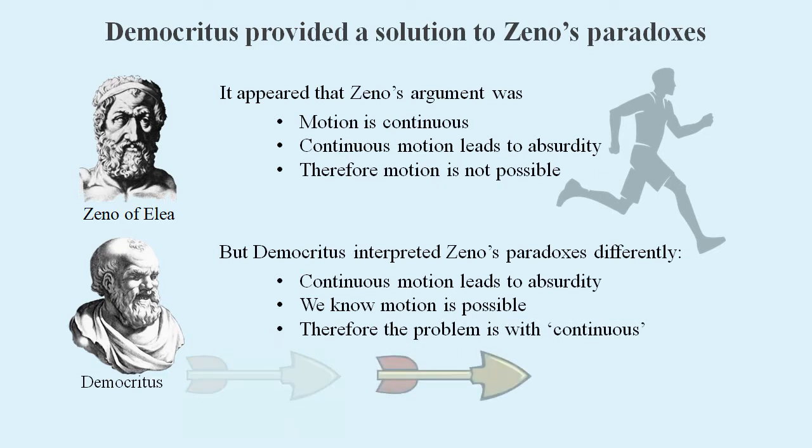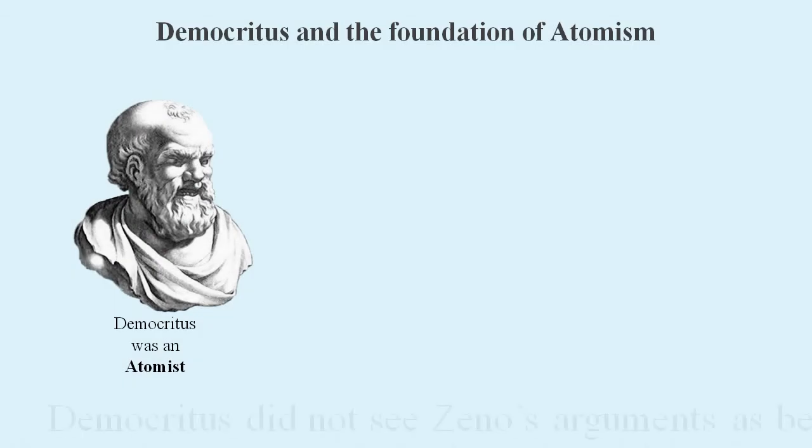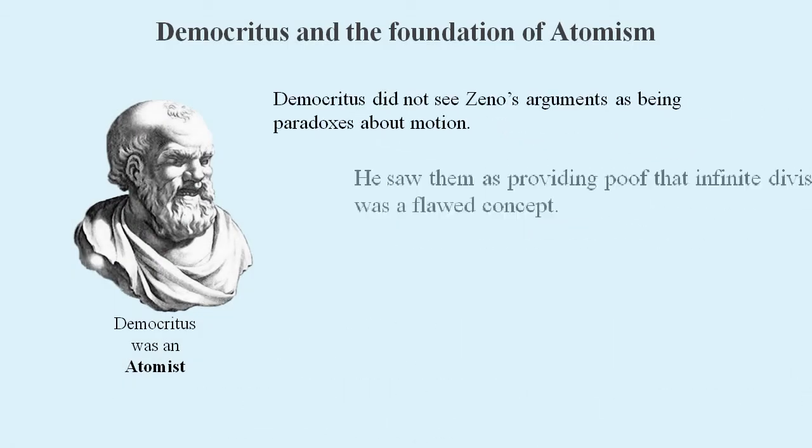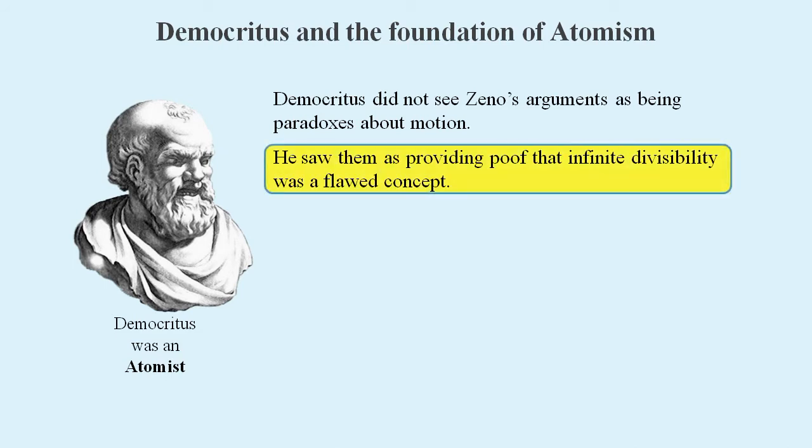And so motion must occur, but as a series of smallest units of time and smallest units of distance, or what we might now call a series of Planck times and Planck lengths. Effectively, Democritus provided a solution to Zeno's paradoxes. All we need to do is accept that infinite divisibility is a flawed concept.